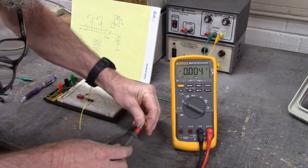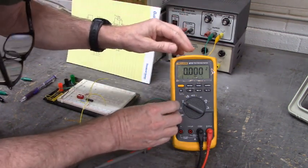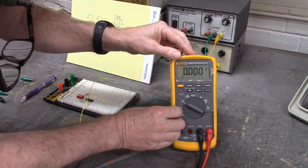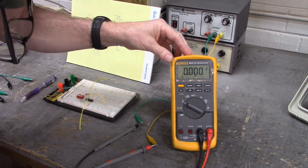Black lead on ground, red lead on the negative output of the power supply. You all see that voltage right there? Looks pretty good.